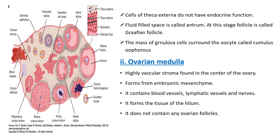The fluid-filled space is called the antrum. This fluid-filled space is clearly visible. At this stage, the complete follicle is called the Graafian follicle. The mass of granulosa cells that surround the oocyte is called the cumulus oophorus — many groups of cells envelope the oocyte and form the cumulus oophorus.